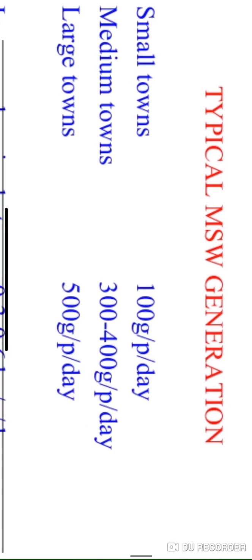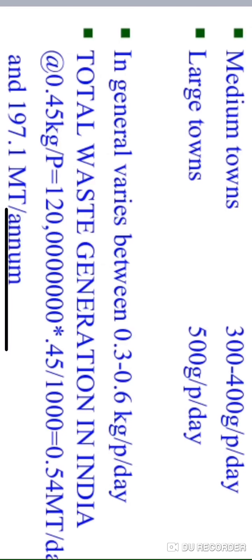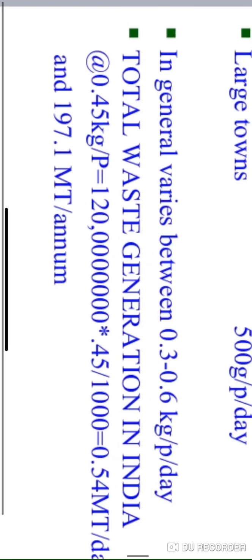Now we will see typical municipal solid waste generation. In a developing country, the rate of solid waste generation is in the range of 0.3 to 0.6 kg per capita per day. As per the size of town: in a small town it will be 100 grams per capita per day; in a medium town, 300 to 400 grams; and in a large town, around 500 grams per capita per day. A huge amount in metric tons of solid waste is getting generated.